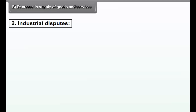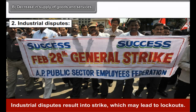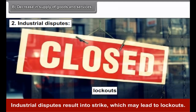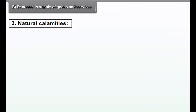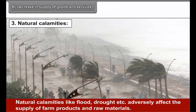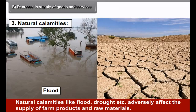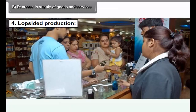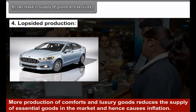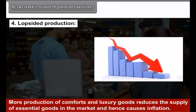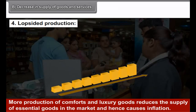Second, industrial disputes. Industrial disputes result in strikes which may lead to lockouts. In such cases, industrial production falls and reduces supply. Third, natural calamities. Natural calamities like flood and drought adversely affect the supply of farm products and raw materials. Fourth, lopsided production. More production of comforts and luxury goods reduces the supply of essential goods in the market and hence causes inflation.